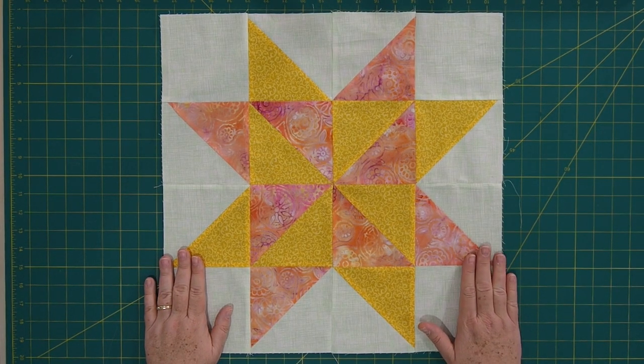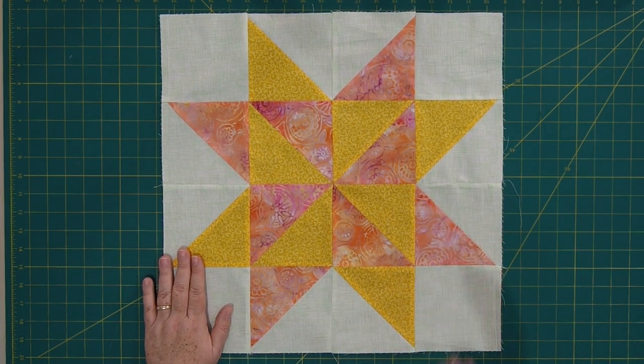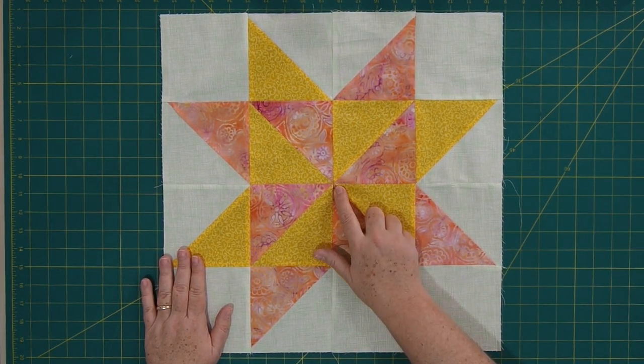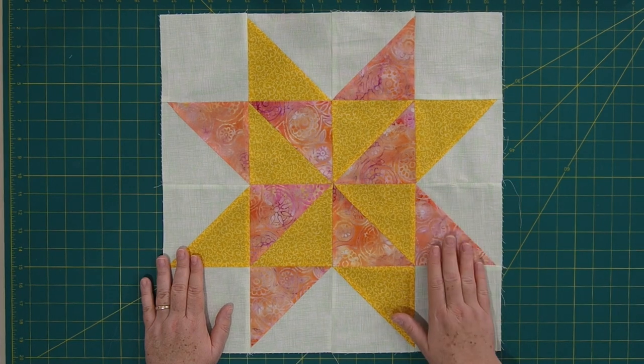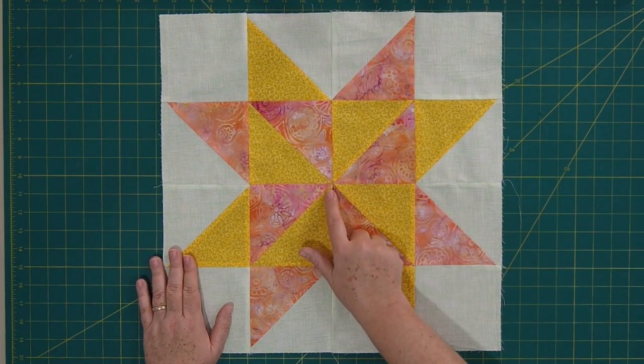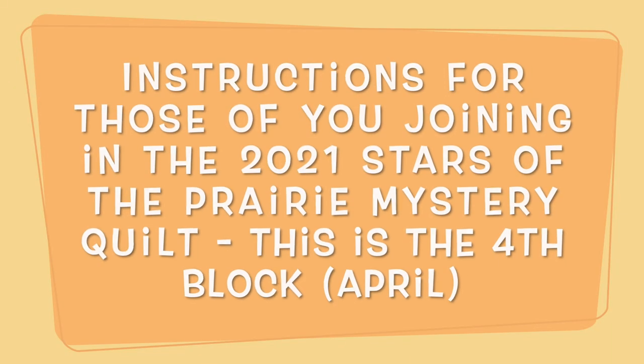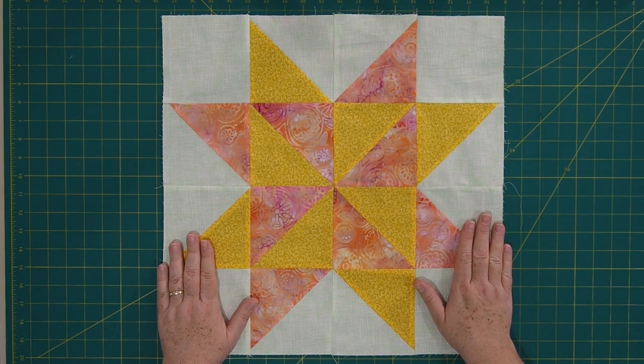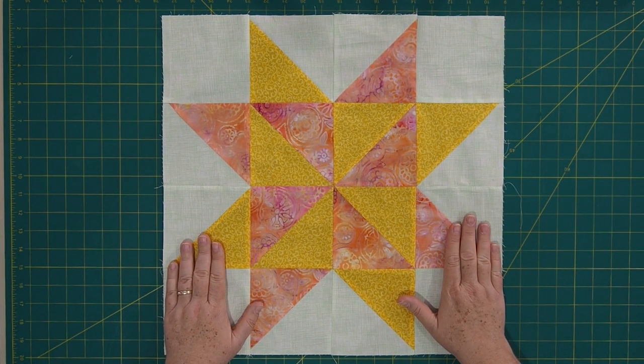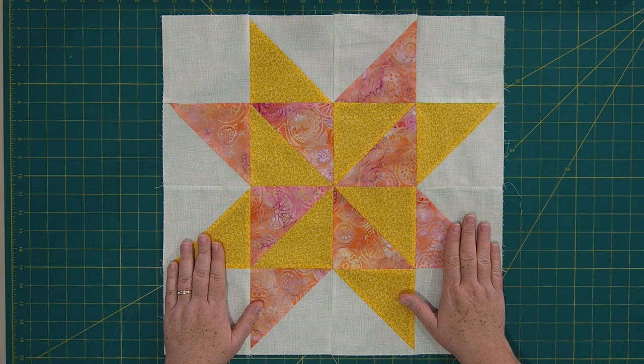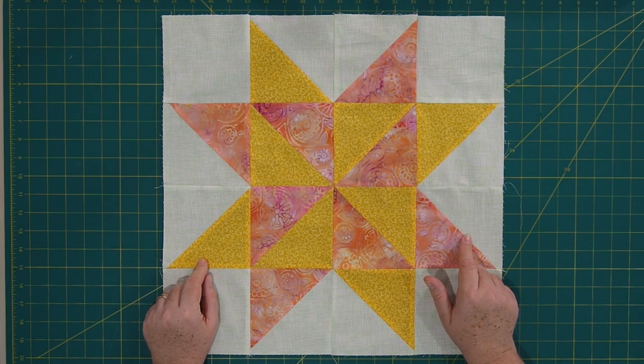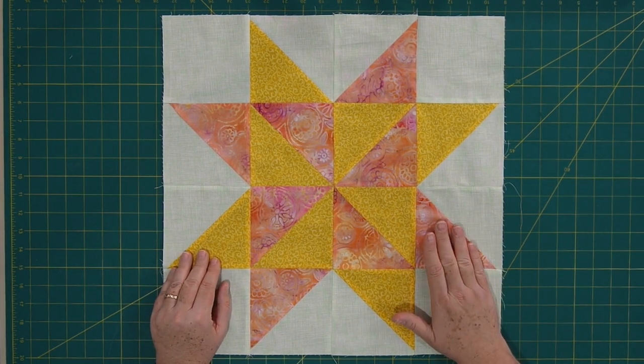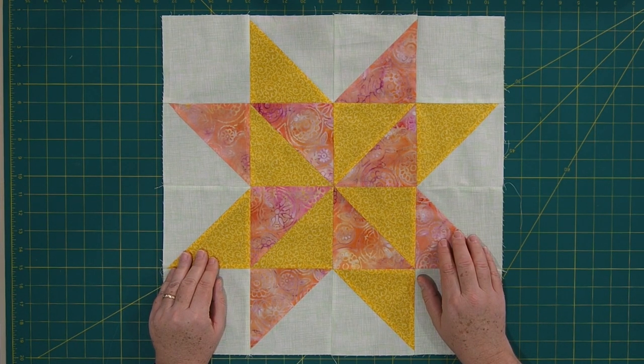Alrighty, so here's my finished pinwheel sawtooth star. It measures 18 and a half inches square. I'm really happy with my point, that's about as good. That one's just a little off, but I will take that any day. I'm happy with that point. That's always a hard one because you have eight points, eight triangles coming together. If you are quilting along with us on the mystery quilt, this is the April block. It's the fourth block in the pattern. And everything's the same. So if you're just here to make the block, that's fine. If you're here for the mystery quilt, you just make one of these blocks this month.